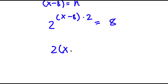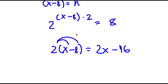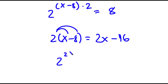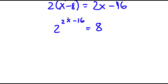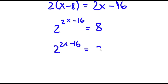Now, 2 times x minus 8 — I have to distribute the 2. 2 times x is 2x, and 2 times negative 8 is negative 16. So I have 2 to the power of 2x minus 16 is equal to 8. Now to solve this, we want to make these two terms the same base. Right now the bases are 2 and 8, which aren't the same. But 8 is the same thing as 2 to the power of 3, and if we turn this into 2 to the power of 3, then both terms are going to have the same base. So I have 2 to the power of 2x minus 16 is equal to 2 to the power of 3.